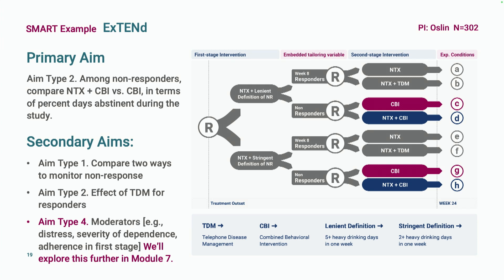This study's primary aim was a Type 2, all about non-responders: comparing the augmentation tactic — naltrexone plus CBI — versus the switch tactic — stopping naltrexone and switching to CBI — looking at the long-term outcome of percent-days abstinence. Secondary aims included a Type 1 aim about which tailoring variable is better, another Type 2 aim on telephone disease management for responders, and Type 4 aims examining baseline moderators of the embedded treatment components.